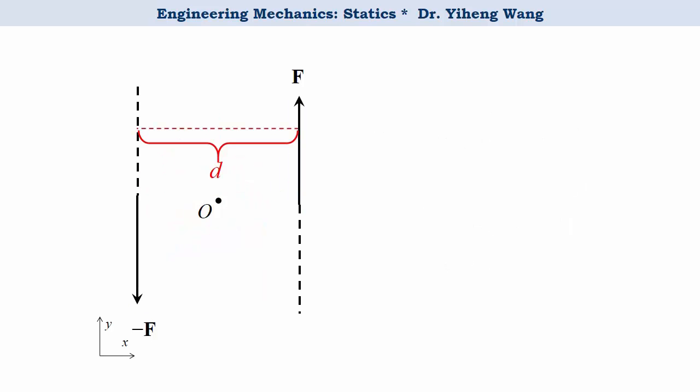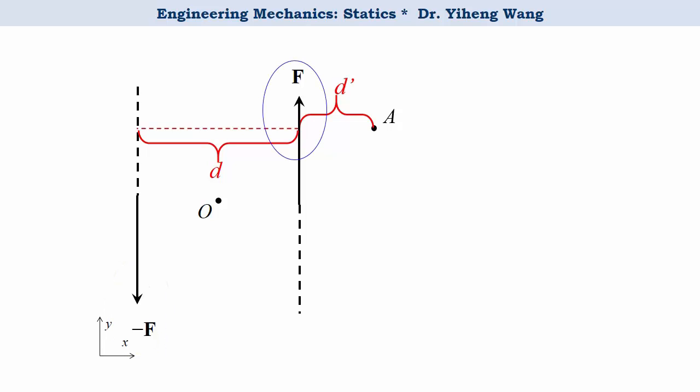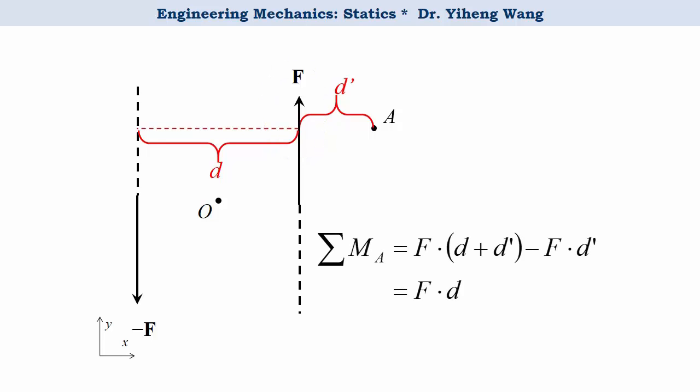In fact, we can also calculate the total moment caused by these two same forces about another arbitrary point, point A, that is at a distance d prime from force F. This force creates a counterclockwise rotational effect about point A with a moment arm of d plus d prime, while the other force creates a clockwise rotational effect about point A with a moment arm of d prime. Therefore, the total moment equals F times (d plus d prime) minus F times d prime, which is still F times d — the same as the moment calculated earlier about point O.